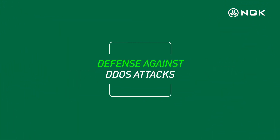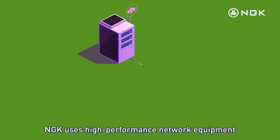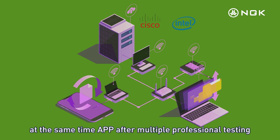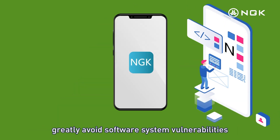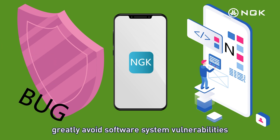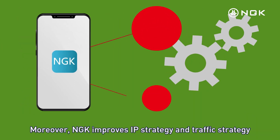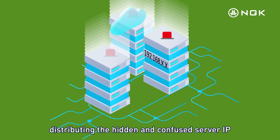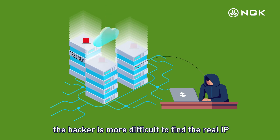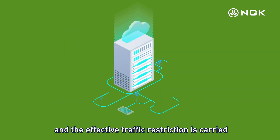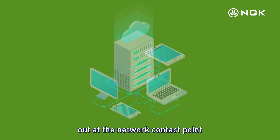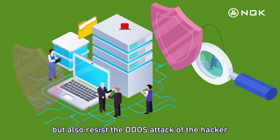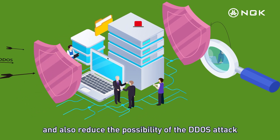Defense Against DDoS Attacks. NGK uses high-performance network equipment with top-level hardware products, and the app undergoes multiple professional tests to greatly avoid software system vulnerabilities. NGK improves IP strategy and traffic strategy, distributing hidden and obfuscated server IPs so hackers find it more difficult to locate the real IP. Effective traffic restriction is carried out at the network contact point, which does not affect normal operation users but also resists DDoS attacks and reduces their possibility.